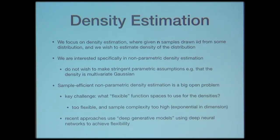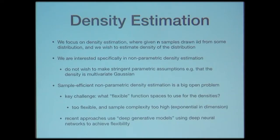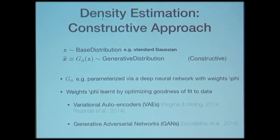Recently there has been progress where people have started using deep generative models — essentially deep neural networks — to get flexibility beyond typical parametric families. These are still parametric, but the number of parameters is so large that you can essentially think of them as a non-parametric family. This is what's known as deep generative models for density estimation, and I'll discuss it in the context of constructive and destructive learning.